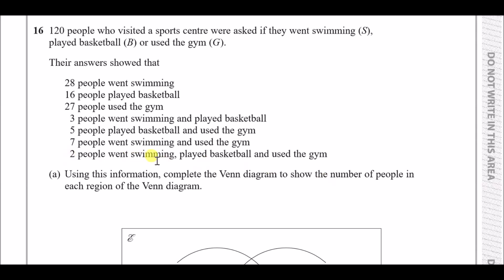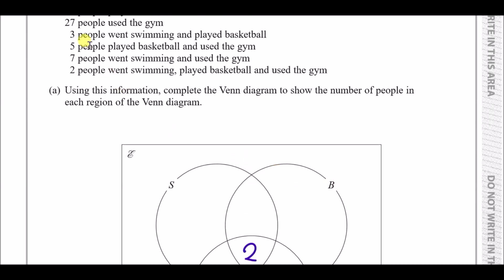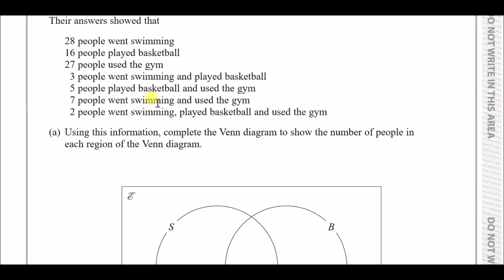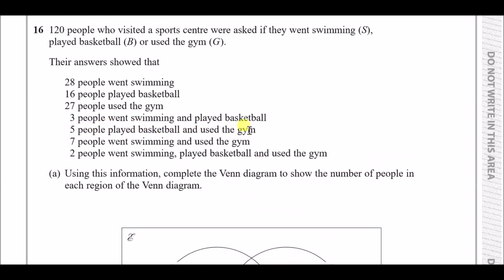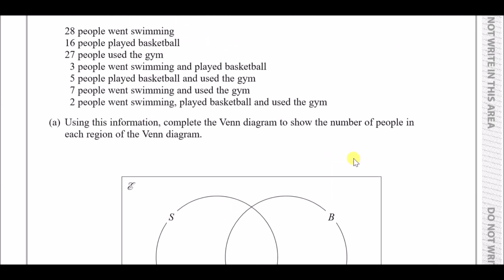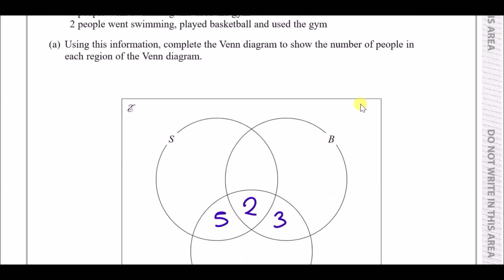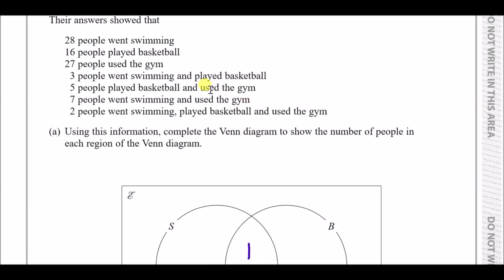Two people did all three activities, so we put 2 in the centre. Seven people went swimming and used the gym including those two, so the swimming-gym only region is 5. Five people played basketball and used the gym, so basketball-gym only is 3. Three people went swimming and played basketball, so swimming-basketball only is 1.